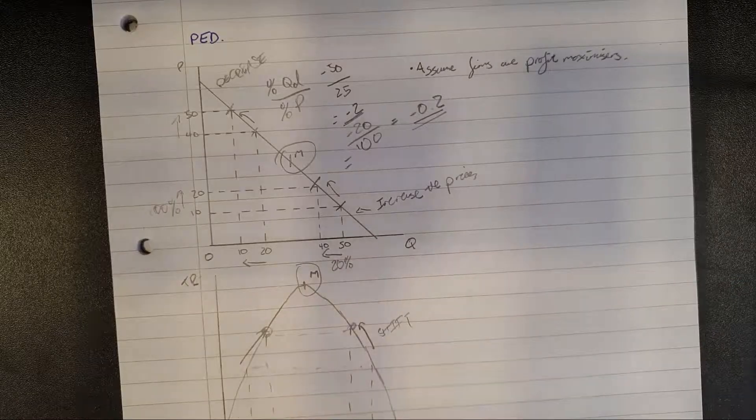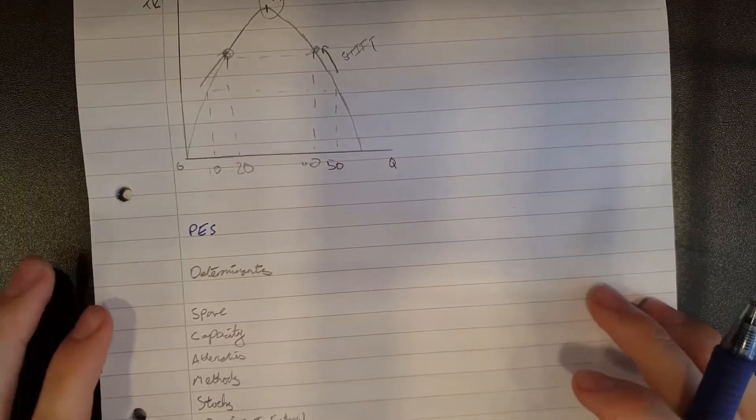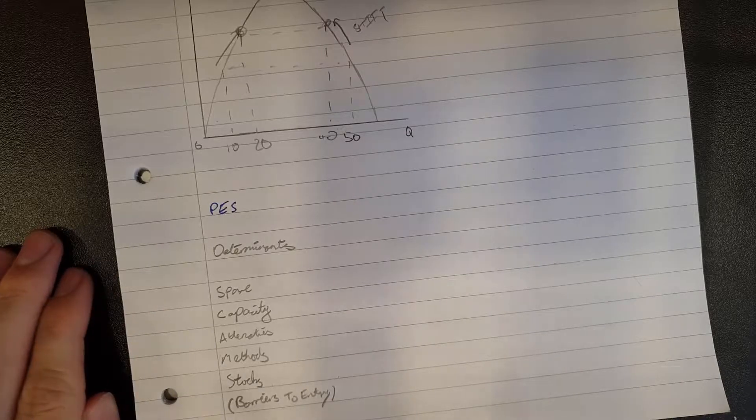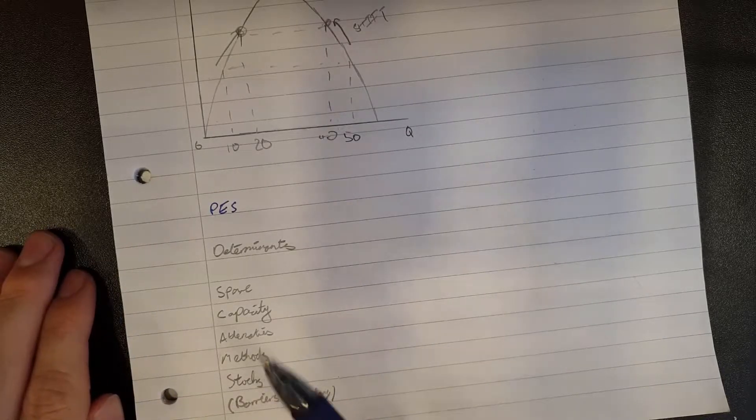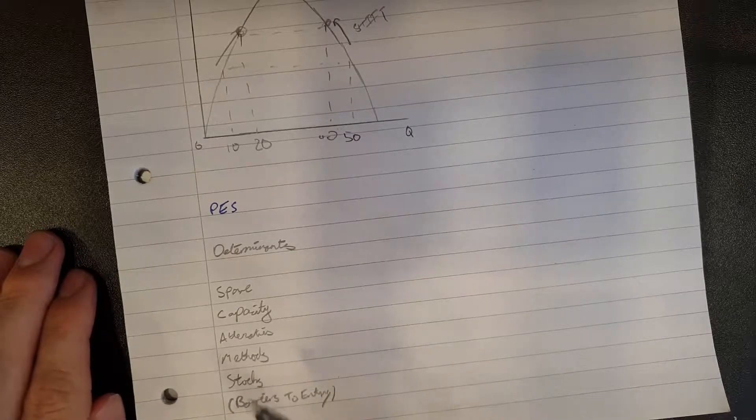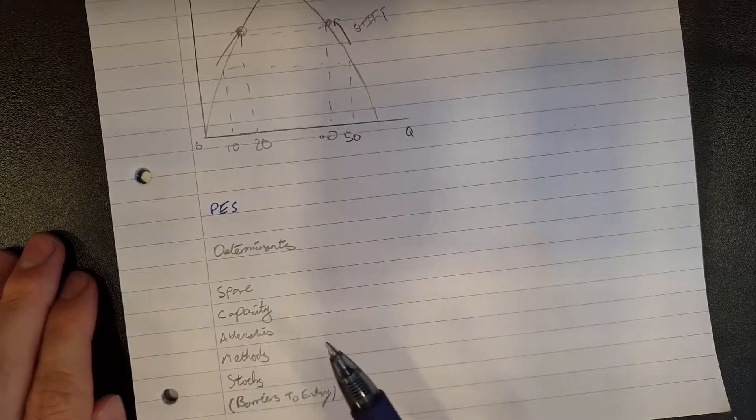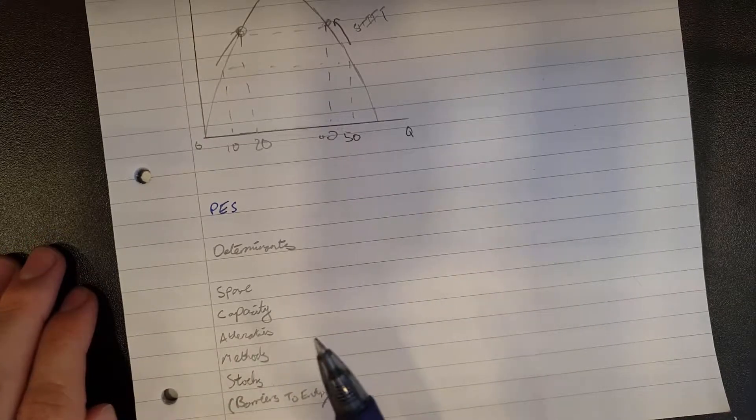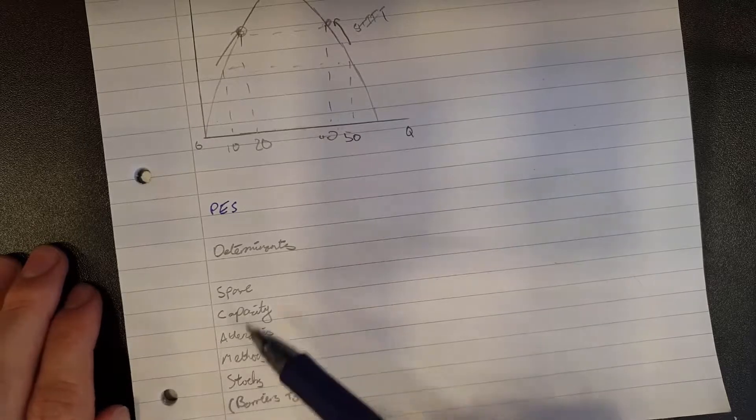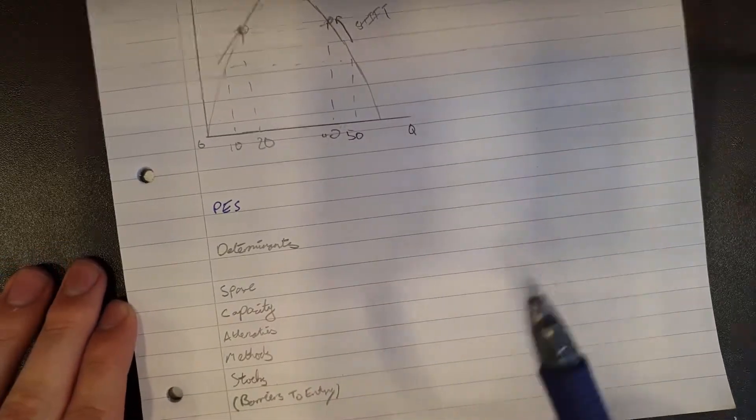Now let's move on to PES. Right, so now price elasticity of supply. PES really is the weird one out of the four main types of elasticity because it's not determined by the market mechanism. Rather, PES is determined by the firms themselves. There's a few different factors that determine PES.